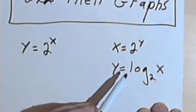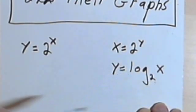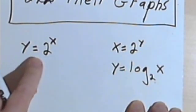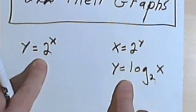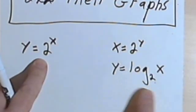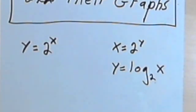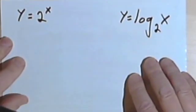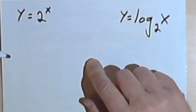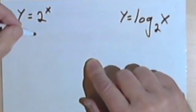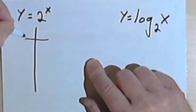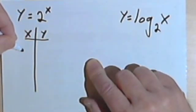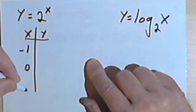Now, probably the best way to go from here is to compare these two functions, the exponential function, y equals 2 to the x, and its inverse, the logarithmic function, y equals log base 2 of x. So let's try that. Here I've written the functions again, and what I'm going to do is make a table of values for each of the functions. So let's start with the exponential function. So let's use the input values negative 1, 0, and 1.